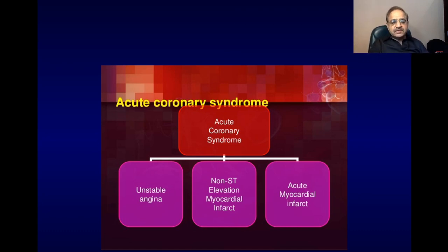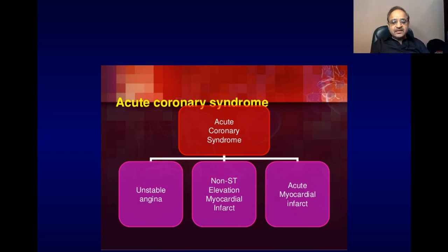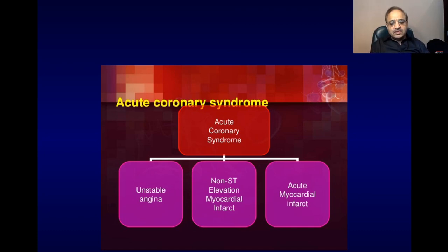In today's presentation I will discuss with you acute coronary syndrome. This is a condition which is caused by either erosion of the plaque or rupture of the plaque, leading to complete occlusion of the coronary artery with a thrombus.